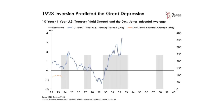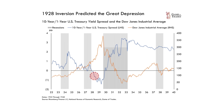Back in April of 1928, the yield curve inverted, predicting that a recession was not far off, as it has done time and time again throughout history. Now, of course, this was not just any type of recession because it ultimately led to the Great Depression, the most severe economic downturn that we've witnessed over the last 100 years.